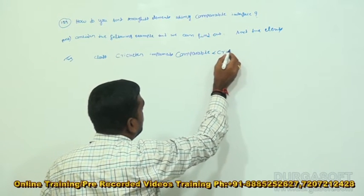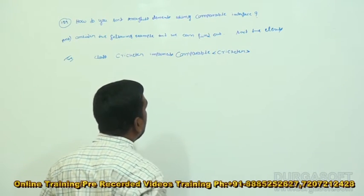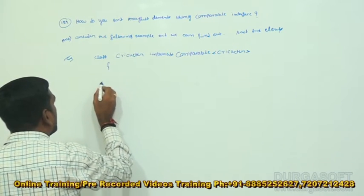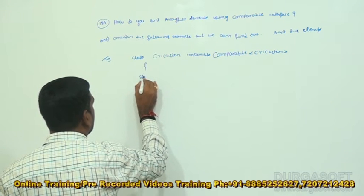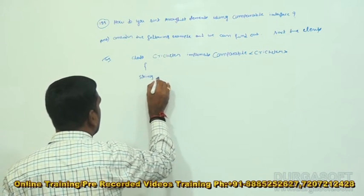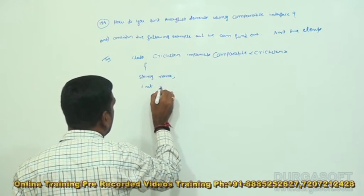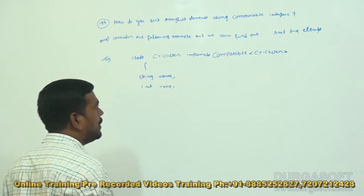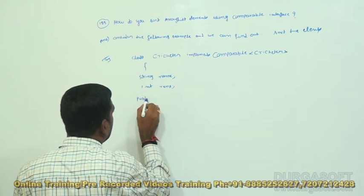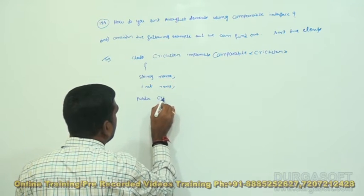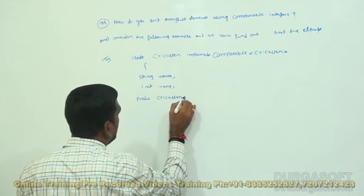Under that, with a generic type of Cricketer. We are declaring two variables here: String name and int runs. After that we can take the constructor — public Cricketer.